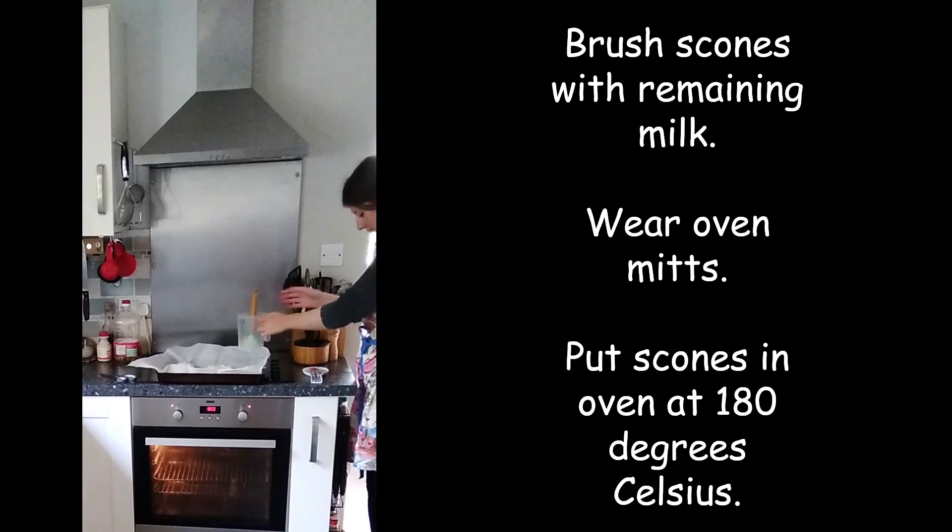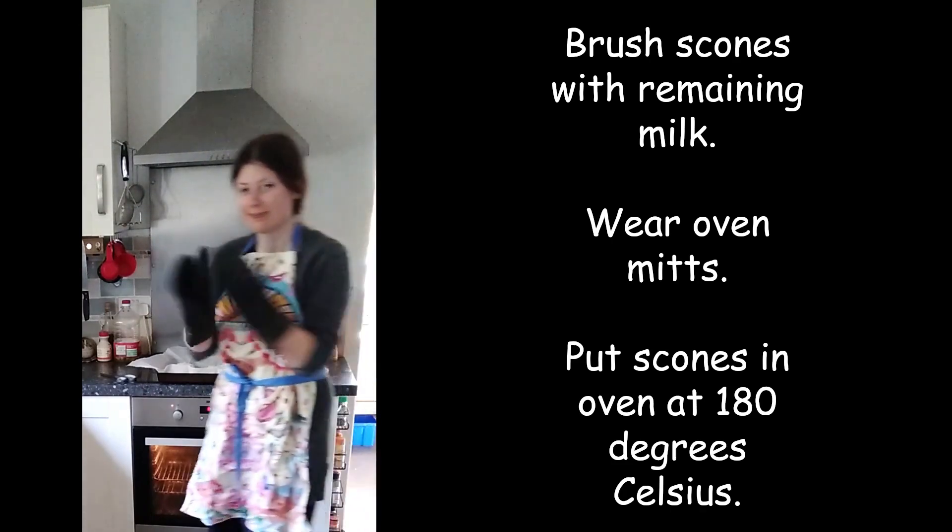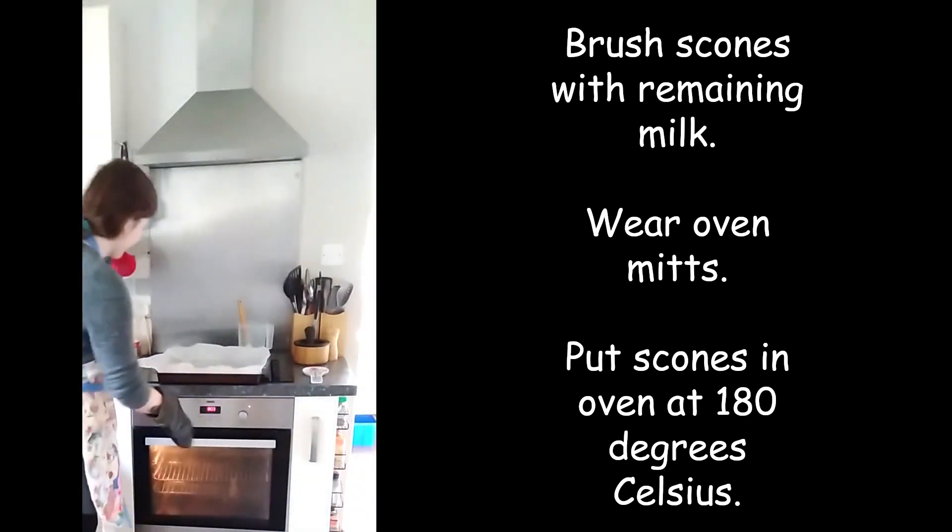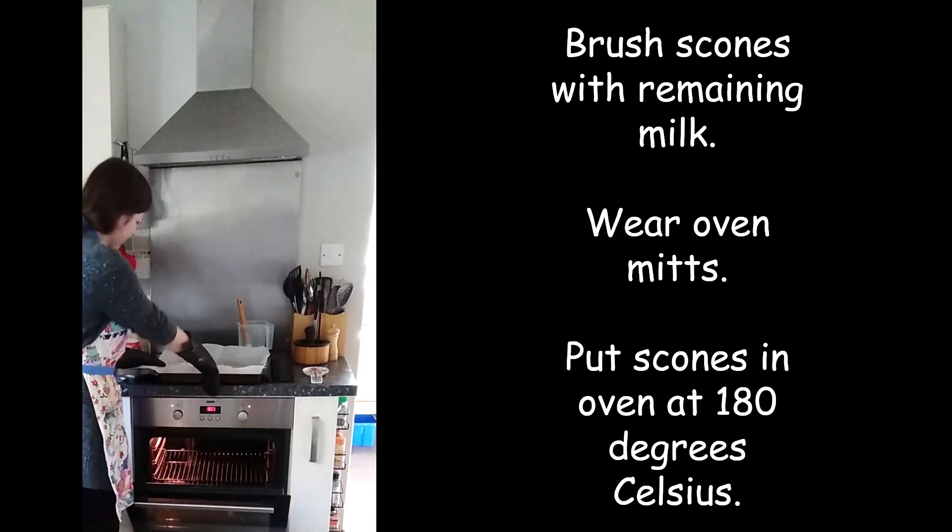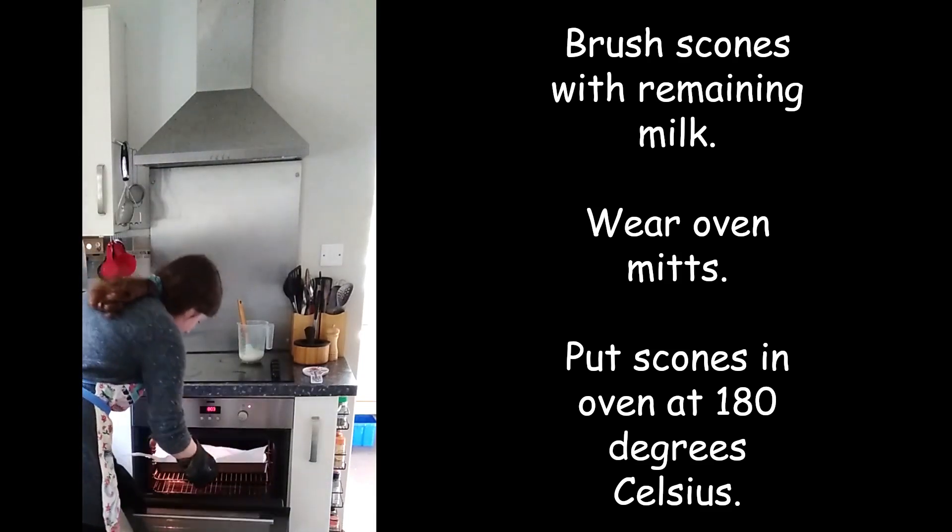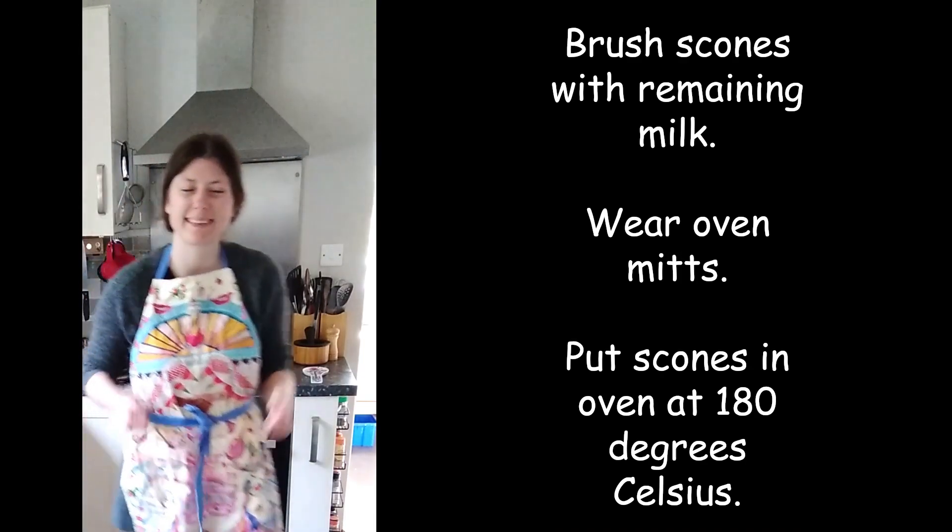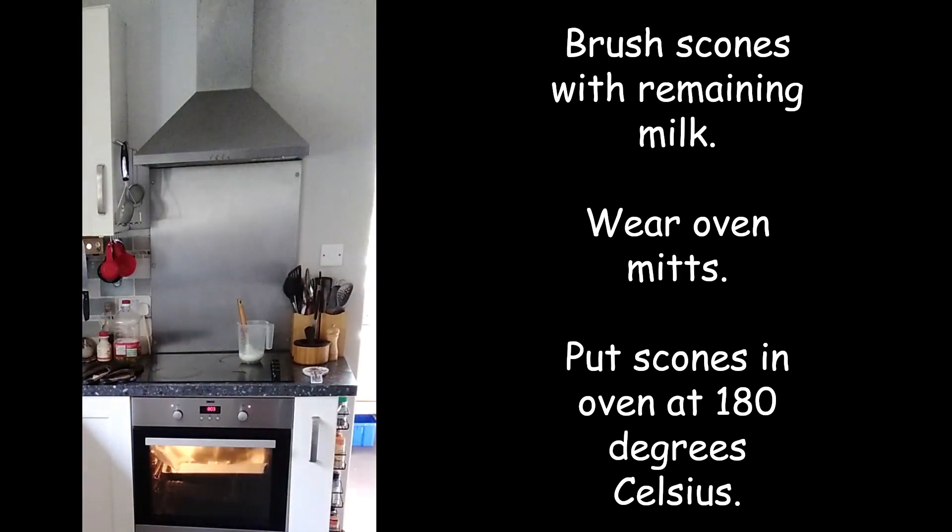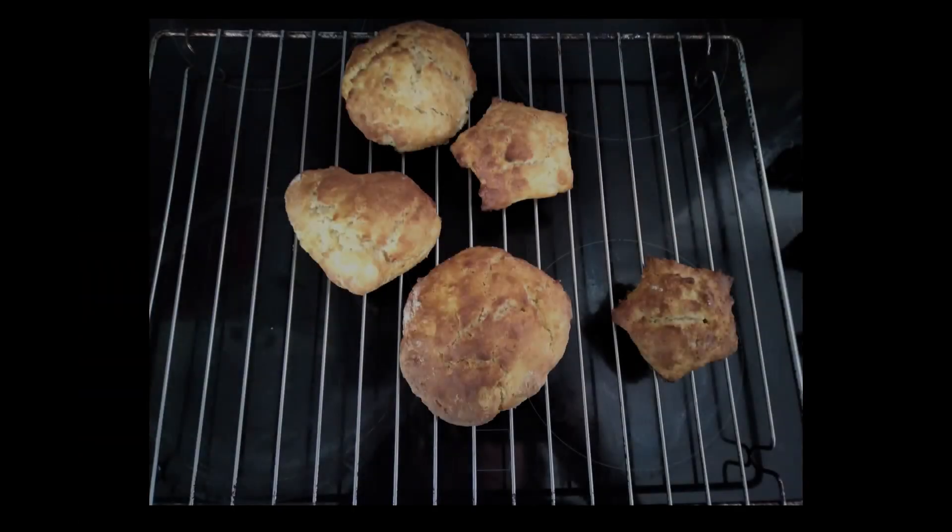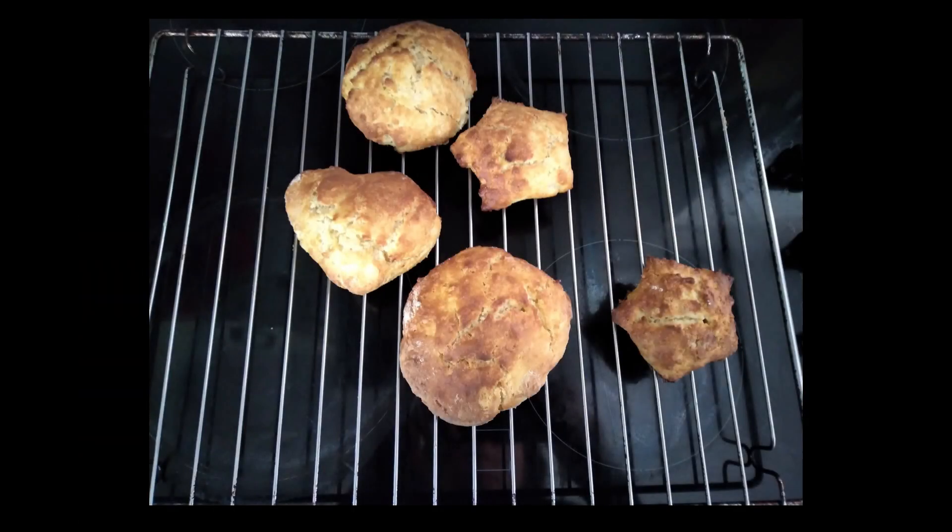Now make sure an adult's watching you while you do this. Put your oven mitts on and put the scones into an oven that's set to 180 degrees Celsius. Now you wait for about 15 to 20 minutes until they're a lovely golden brown color like this.